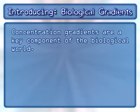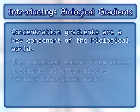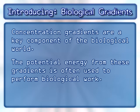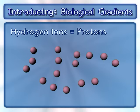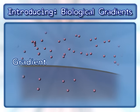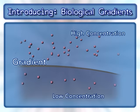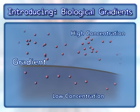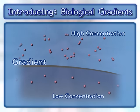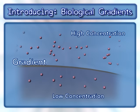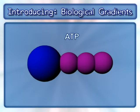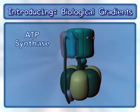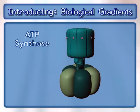Concentration gradients are a key component of the biological world. The potential energy from these gradients is often used to perform biological work. Here we will focus on hydrogen ion concentration gradients. Hydrogen ions are also known as protons. A gradient exists when there is a higher concentration of a molecule in one compartment compared to a neighboring compartment. This animation will demonstrate how the potential energy that results from a hydrogen ion gradient uses ADP and inorganic phosphate, also known as PI, to synthesize ATP. This process involves an enzyme complex called ATP synthase.